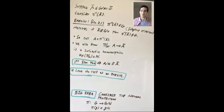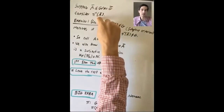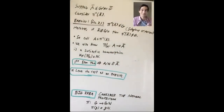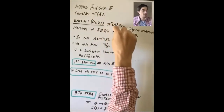We have the natural projection from G to G mod N, which is a surjective homomorphism whose kernel is N. Suppose we have a subgroup A-bar of G-bar. We're going to consider the inverse image of this subgroup under the natural projection. There's an exercise in section 3.1 that says if you take the inverse image of a subgroup under a homomorphism, that's also a subgroup. So pi-inverse of A-bar is a subgroup of G, and you can check this easily using the subgroup criterion.